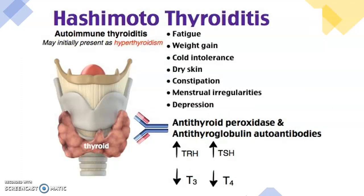Hypothyroidism is where the thyroid isn't making enough T3 and T4. The major cause is Hashimoto's thyroiditis. In hypothyroidism, you have low body heat, so there's cold intolerance and bradycardia — everything slows down. Your heart rate slows, your gastrointestinal motility slows, your basal metabolic rate slows, so you'll have weight gain and fatigue.